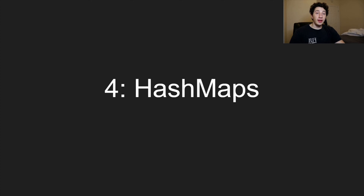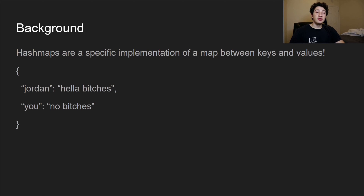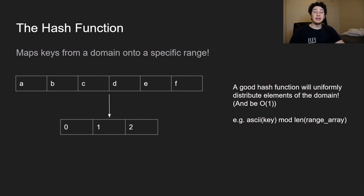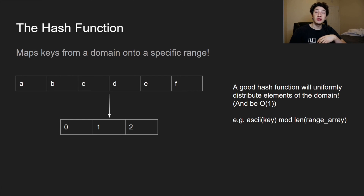Alright, so hash maps — what are they? Basically, hash maps are a specific implementation of an associative array or a map, so they're going to have some keys and corresponding values, as demonstrated on the slide. The general way that hash maps work is they are built off of a concept called a hash function.